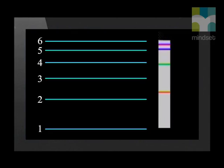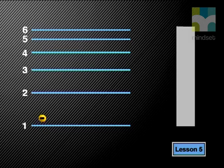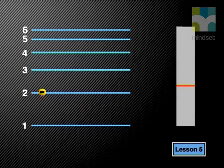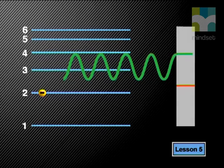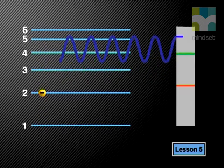To understand why only some colors are seen we need to look inside the atom at the microscopic level. In an animation for hydrogen, notice the electron can be excited and fall back different numbers of energy levels. The color of light emitted depends on how many energy levels the electron falls. Red light is emitted when the electron falls one energy level, green when it falls two, blue when it falls three, and violet when it falls four energy levels.